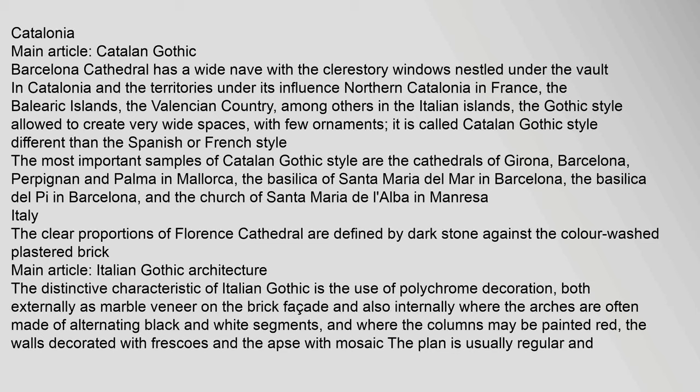In Catalonia and the territories under its influence — including Northern Catalonia in France, the Balearic Islands, and the Valencian Country — the Gothic style allowed for the creation of very wide spaces with few ornaments, called Catalan Gothic style. The most important examples of Catalan Gothic style are the cathedrals of Girona, Barcelona, Perpignan and Palma in Mallorca, the Basilica of Santa Maria del Mar in Barcelona, the Basilica del Pi in Barcelona, and the Church of Santa Maria dell'Alba in Manresa.